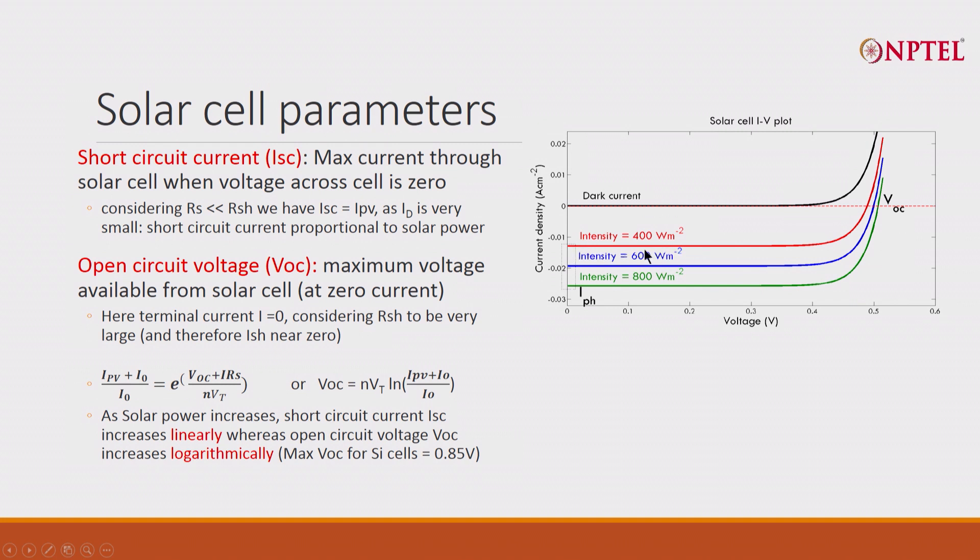And at 400 watt per meter squared, you will see this current; at 600 watt. Remember, there is a negative direction, which is the current that we are interested in.